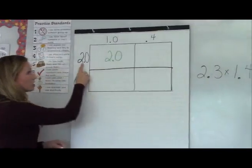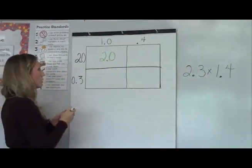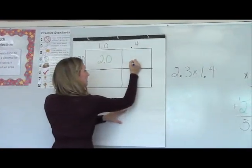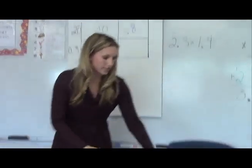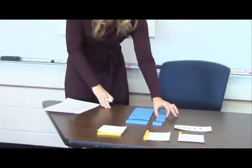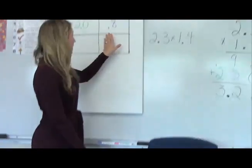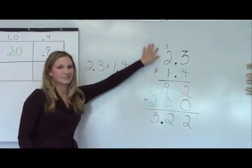Next, I'm going to multiply two wholes by four tenths. Two wholes times four tenths gets me eight tenths. When we look at our model, we can see that I have the four tenths and the four tenths to get the eight tenths total. And the standard algorithm, it says nine, but that's because I already regrouped.